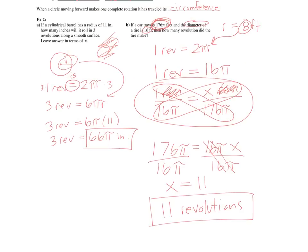You could have set this proportion up the other way as well: when you travel 16 pi feet you've made one revolution, so traveling 176 pi feet means x revolutions — same proportion, same result. That's all there is to the lesson. If you have any questions, please ask for help. Begin the assignment.